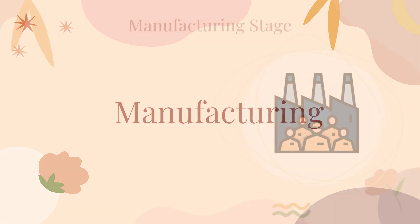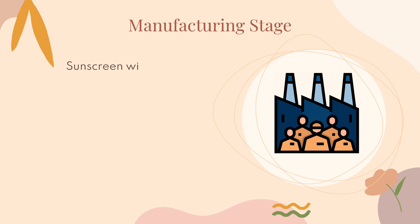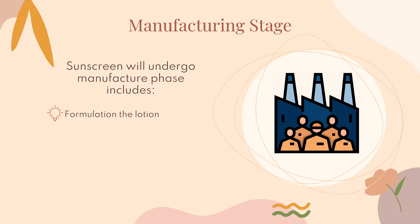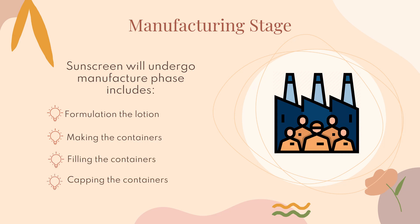The second stage of the sunscreen life cycle is manufacturing. At this stage, sunscreen undergoes manufacturing activities such as formulating the lotion — including deciding the type of sunscreen, its specific function, and SPF — making the containers including their design and material such as glass or plastic, filling the containers, storing them, and lastly preparing for shipping to consumers.